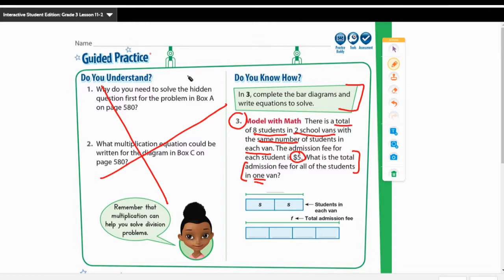So if we have eight students in two vans, well, we have a hint here. We're substituting S. Remember in equations, you're going to substitute a letter for the missing value, for the missing number. The students in each van, we're using an S to represent that. There are two boxes, so we know that's the two school vans. So we're going to put an eight at the top. Now we know that means our equation is going to be eight divided by two equals S. Well, eight divided by two equals four. So S equals four.